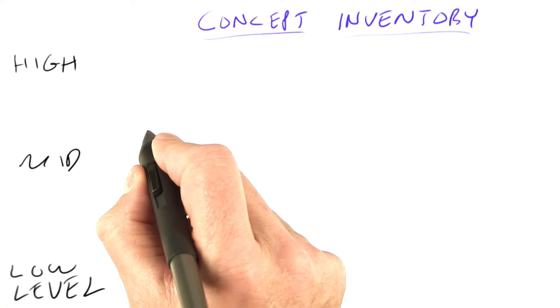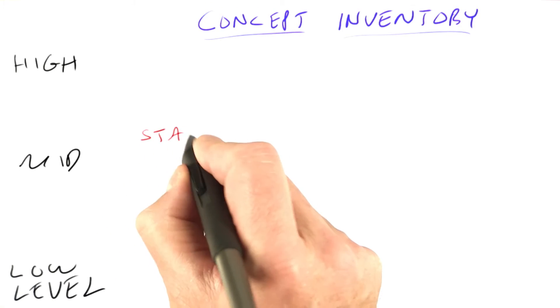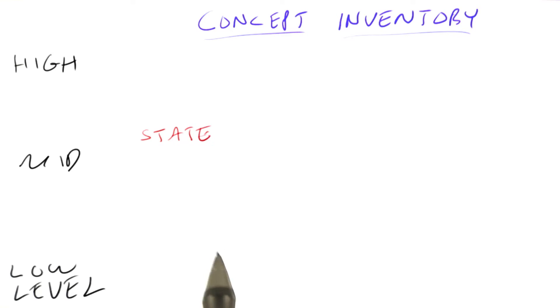At the mid-level, there's a concept of current state of the game. We're inching towards a search problem and we know that we have to represent states for a search problem, so we want to know the current state of the game.